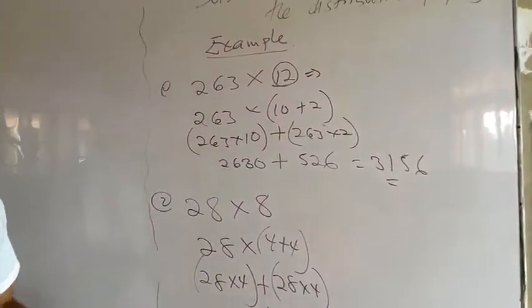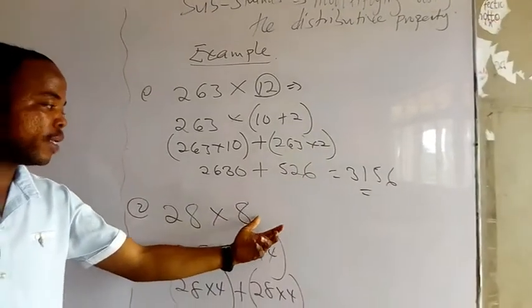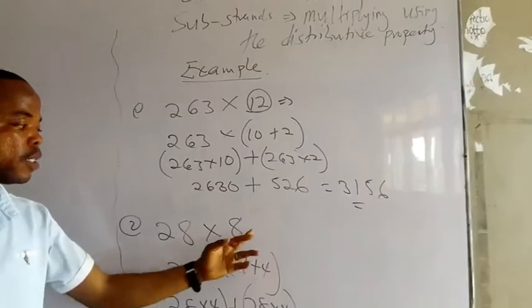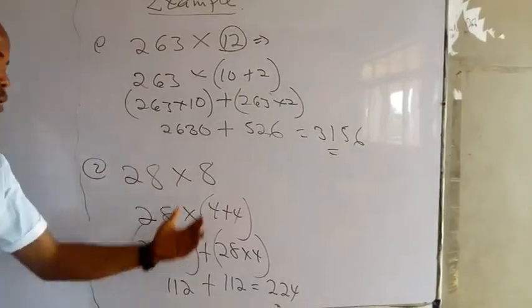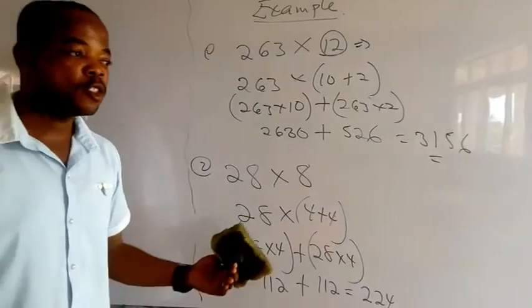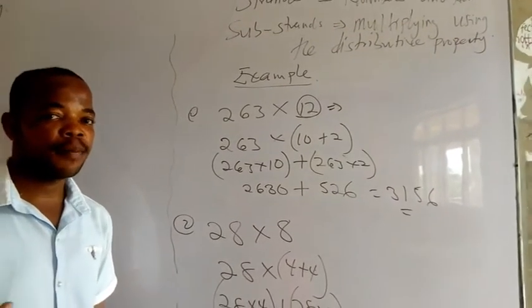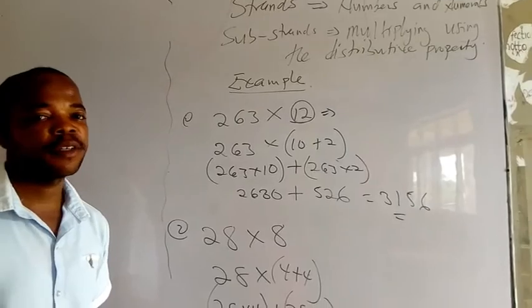I hope it is clear. So when you are given work, you can pick any of the numbers. Either 6 and 2, some can pick 5 and 3, some can also pick 4 and 4. When you work with that, you still end up with the same answer. So I'll try when I send my work through my WhatsApp line, then just do the work and send it through my WhatsApp line. Thank you very much.